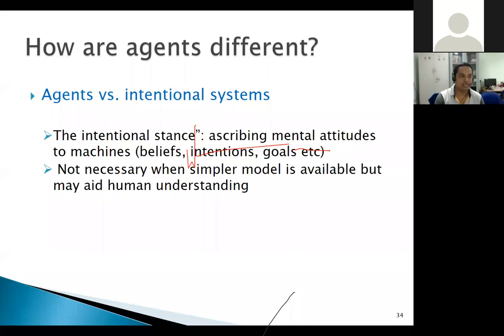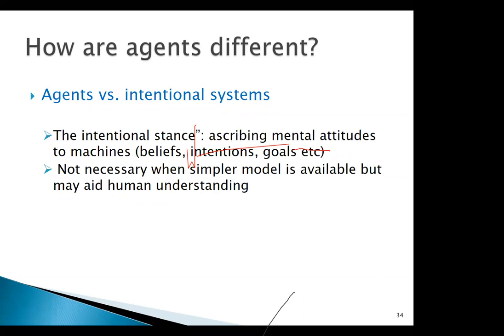Agent versus intentional system: an intentional system has a mental attitude. Inside the agent you have mental attitudes like belief, desire, and intention. When you say intentional system, it has belief, intention, and goal. Similarly, when we talk about agents, they have belief, desire, and intention. These are quite similar things.